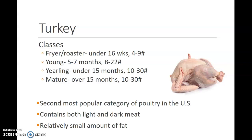Turkey, very common around the holidays, is broken into a couple classes. Your four to nine pound average turkeys are called your fryers or your roasters — they are under 16 weeks old. Your young turkeys are then five to seven months old, eight to 22 pounds on the average. The young, as well as the yearling, is what we'll find in most of our grocery stores. The yearling is about 10 to 30 pounds average, under 15 months old. The mature turkeys are over 15 months old, 10 to 30 pounds on the average.